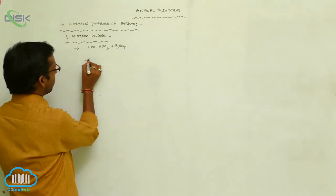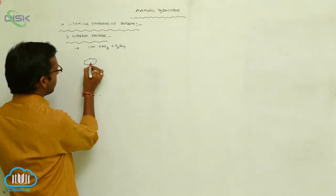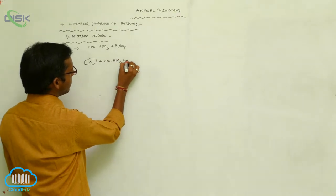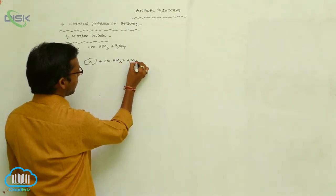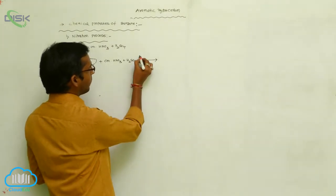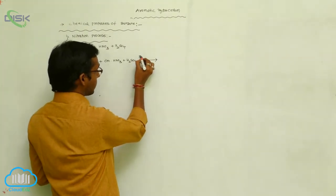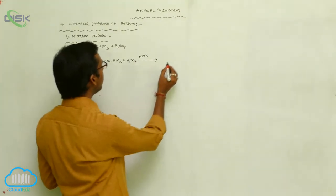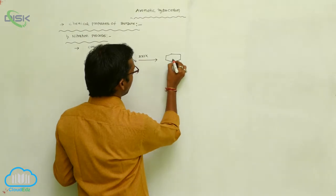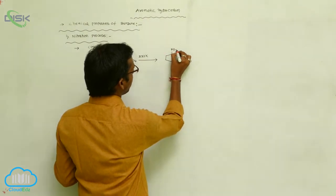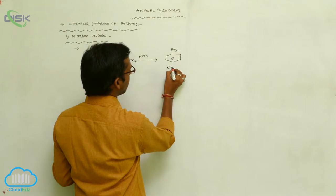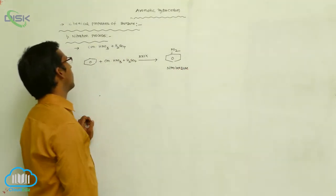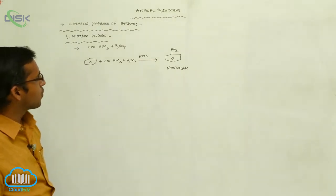See the reaction: benzene is reacted with concentrated HNO3 plus H2SO4 at 333 Kelvin temperature. At this temperature, the nitro group is introduced on benzene, and nitrobenzene is formed. That process is called the nitration process.